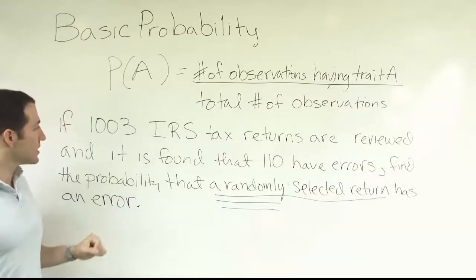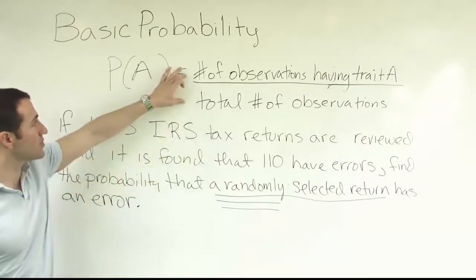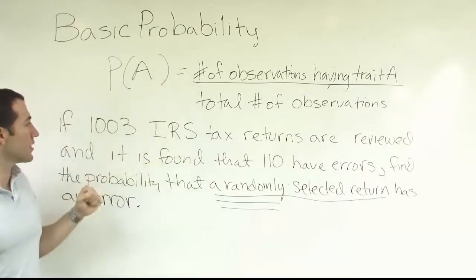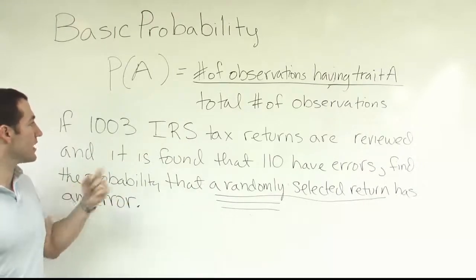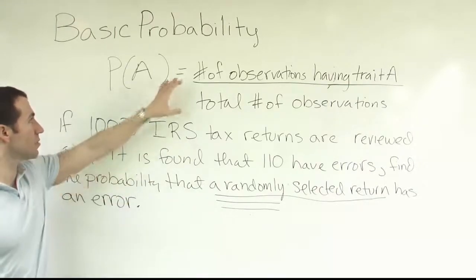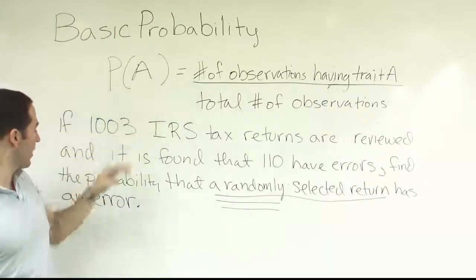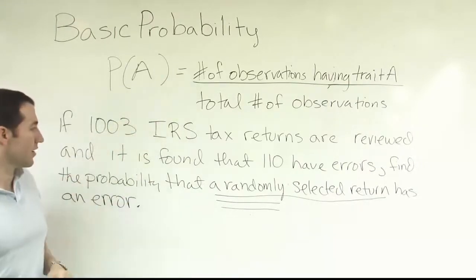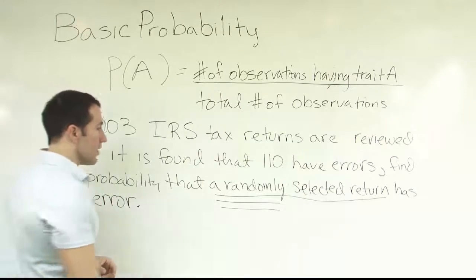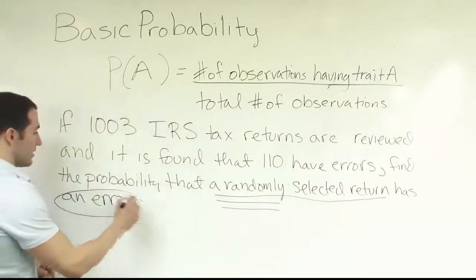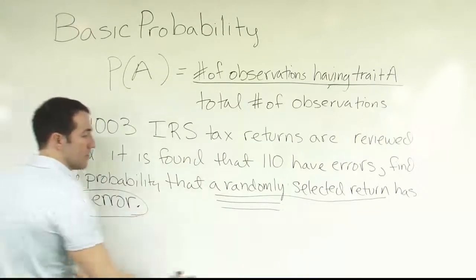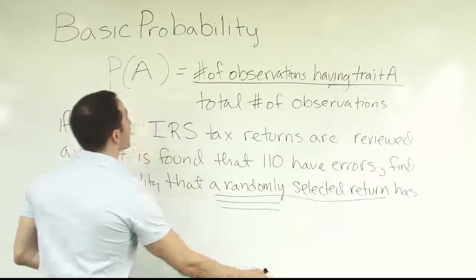For this one, just the fact that we're grabbing only one item helps us realize it's basic probability. It's going to be a single fraction with this structure, because this problem is working from a sample — we took a sample of IRS tax returns.